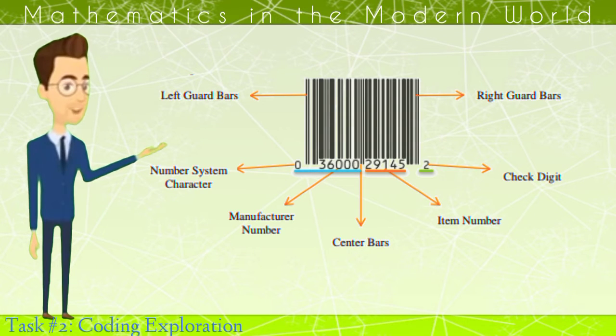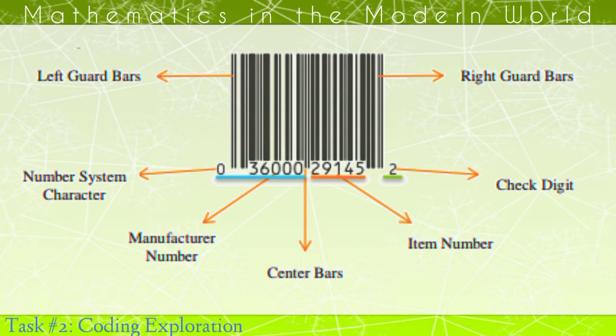This is a sample of barcode. A barcode consists of left guard bars, number system character, manufacturer number, center bars, item number, check digit, and the right guard bars.